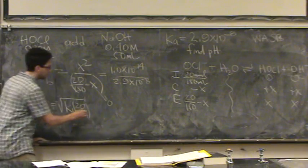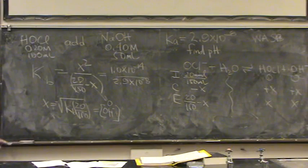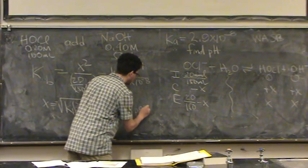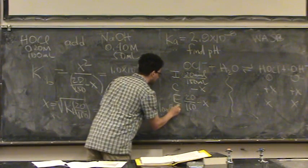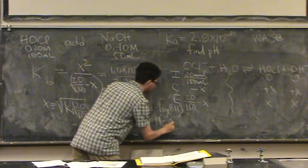So, this is, here's the concentration of OH minus. And so, POH equals the negative log of OH minus. And pH is 14 minus POH.